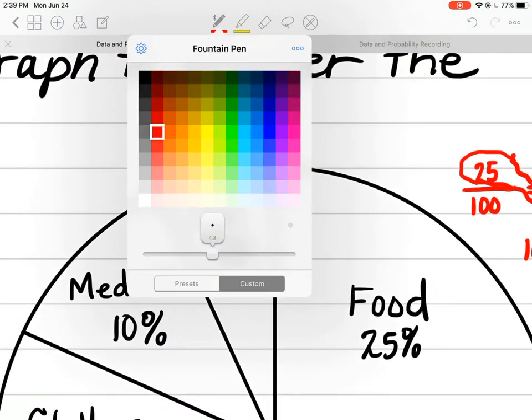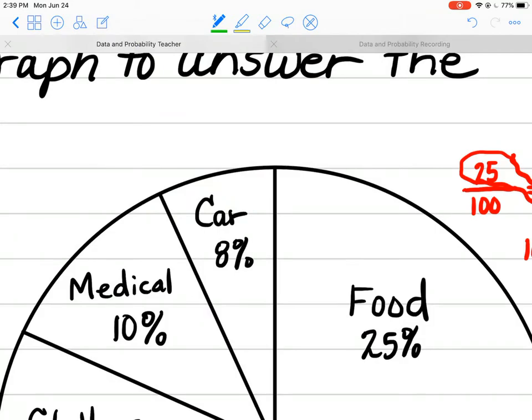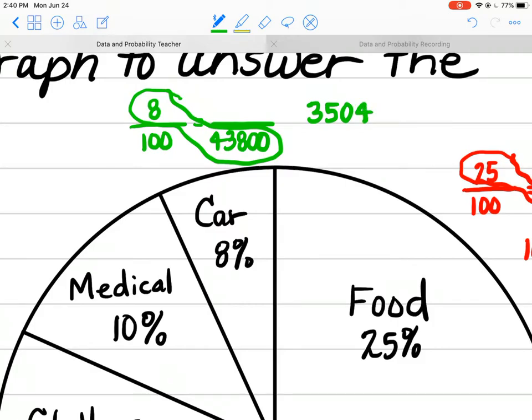Car expenses. Let me get a different color. Percent over 100, 8 over 100. Getting lots of percent practice. $43,800. Draw the peanut and multiply it. Divide by 100, and you get $3,504 for my car per year. So oil changes, gas, tires, all of that good stuff.